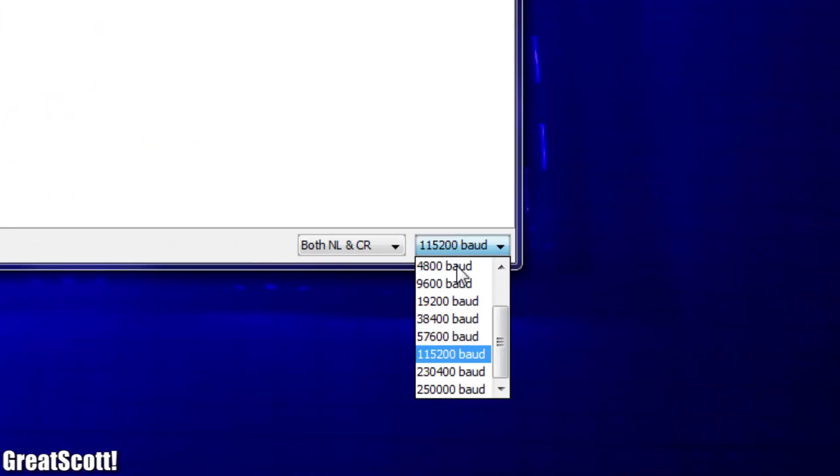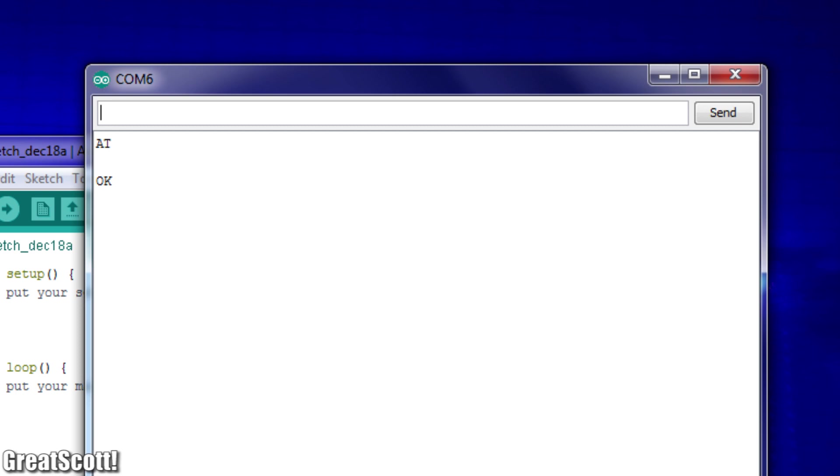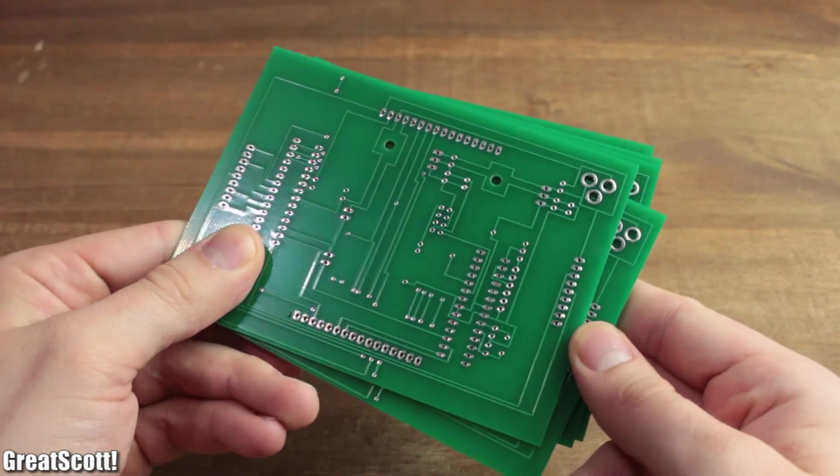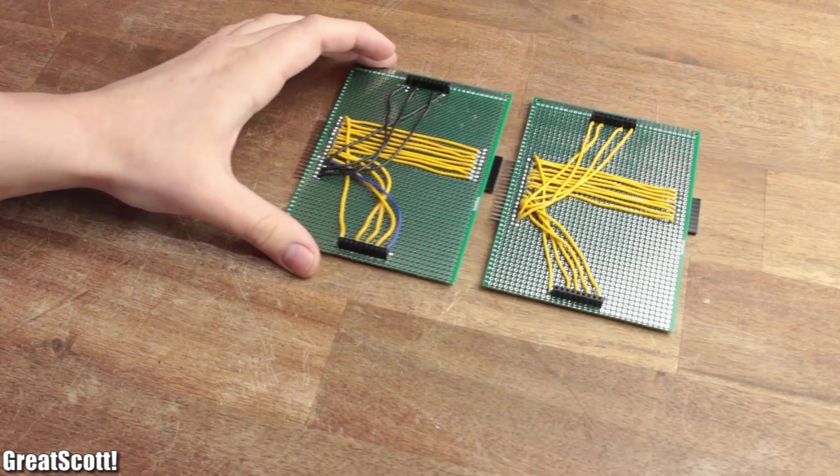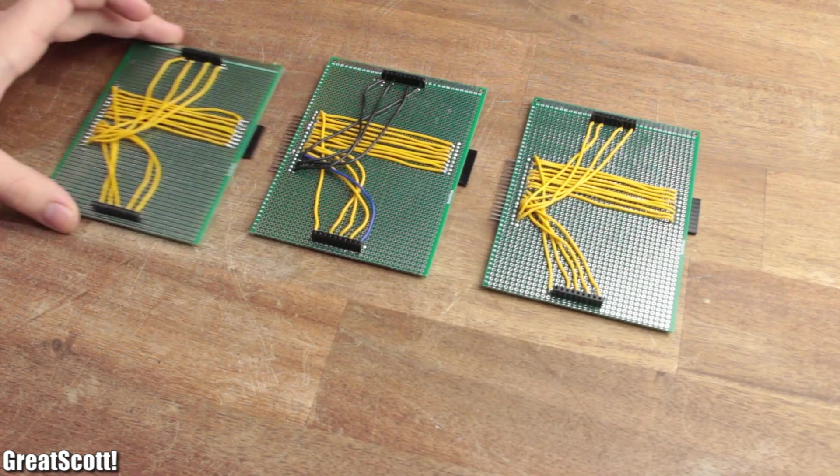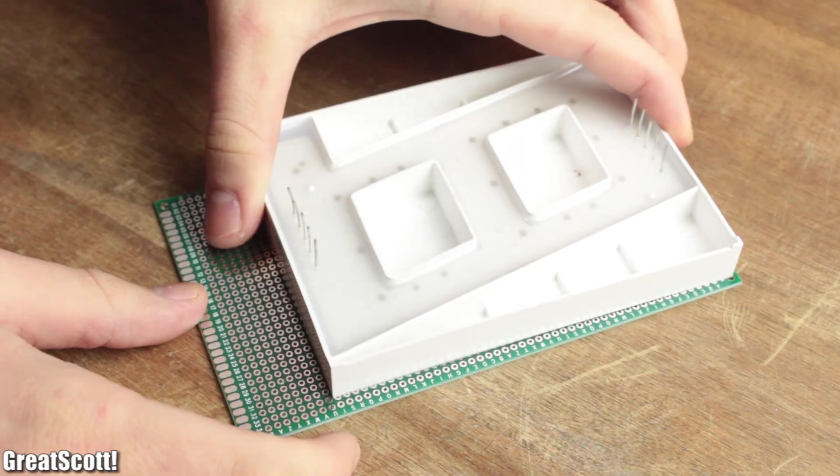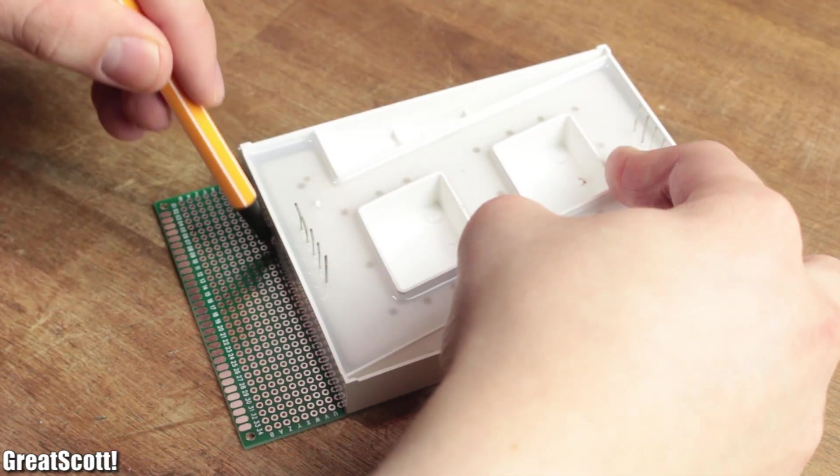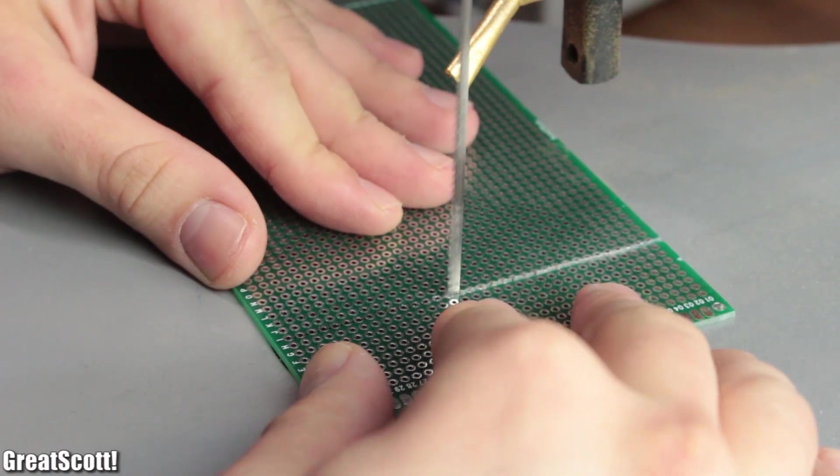Moving on, since I already have 4 PCBs with TLCs I only need 4 more homemade perf boards which forward power, data and distribute the TLC outputs 8 to 15 to the display. For that I marked the length of the 7 segment display onto each perf board and used my scroll saw to make the cut.